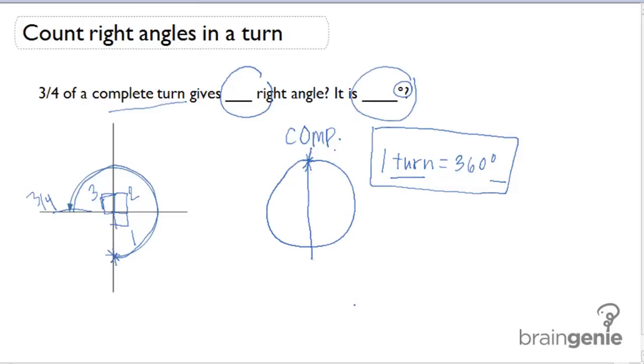If you look at a full turn, there are four right angles that make it up. We've gone three of the four, so three-fourths of a turn is equivalent to three right angles.